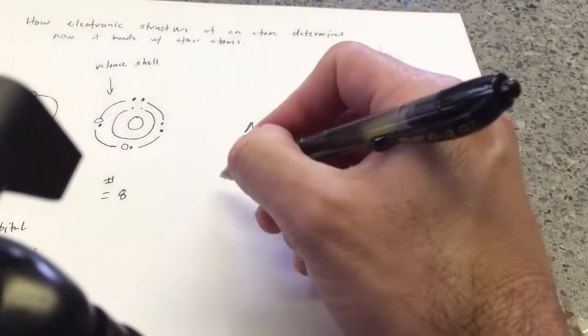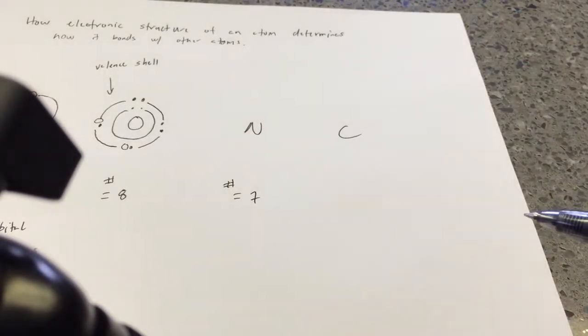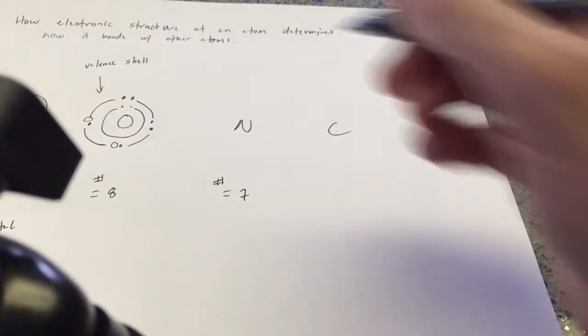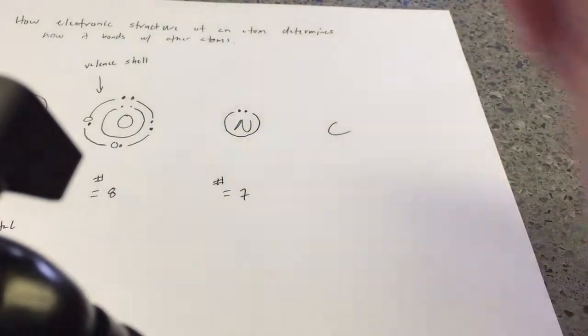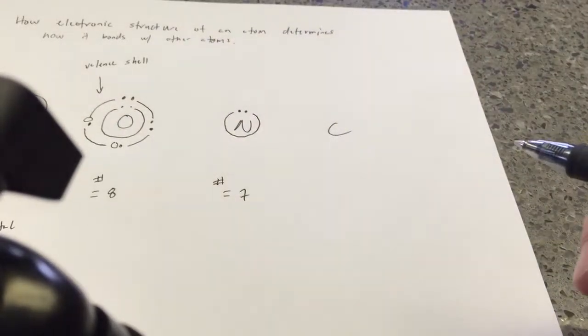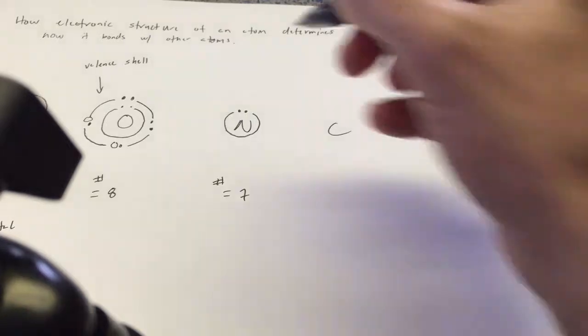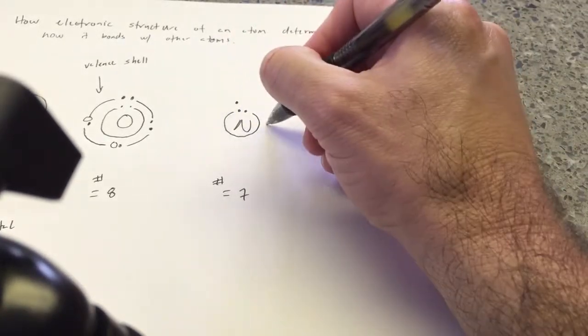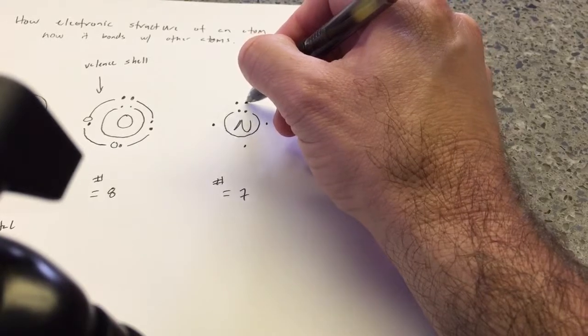Okay, so nitrogen has an atomic number of seven. Okay, so where do we put the first two electrons? One and two. Finish off that inner orbital, right? Okay, now how many more electrons can we put on here? Five more? All right? So three, four, five, six, seven.